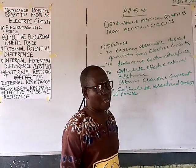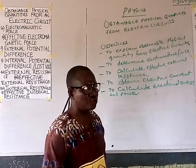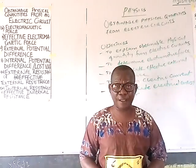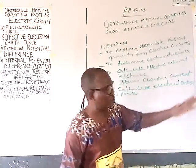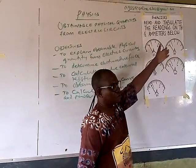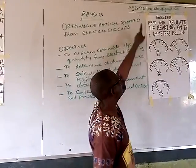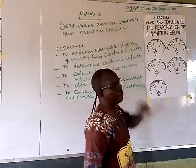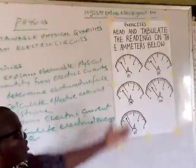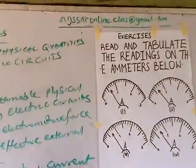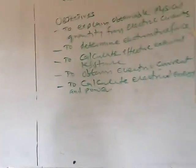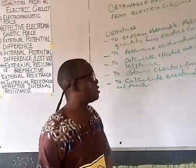Based on last class teaching, you were taught how to take readings from the ammeter. I would like you to briefly work on this exercise and send the solution to the address shown above. I will give correction next class. You are to read and tabulate the readings on the ammeter shown below — five ammeters are indicated.